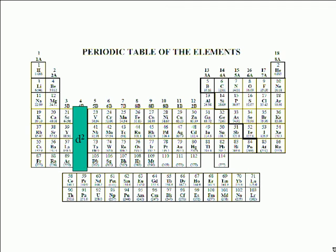For column 5, it's d3. For column 6, it's d4. For column 7, which includes manganese, it's d5. For column 8, it's d6. For column 9, it's d7. For column 10, it's d8.